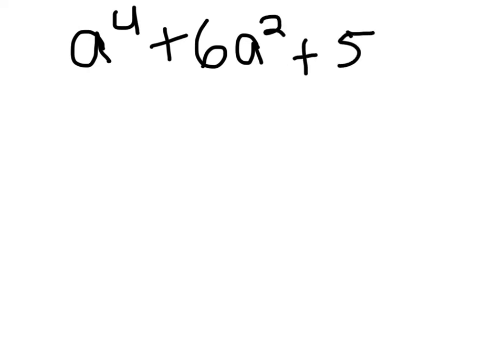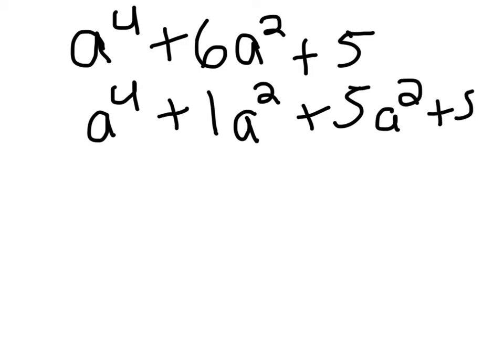All right, so the equation we have is a to the 4th plus 6a squared plus 5. So what we're going to do is keep the a to the 4th, then add 1a squared plus 5a squared and then plus 5 because the 1a and the 5a squared added together, that equals the 6a, and then multiplied equals the 5.